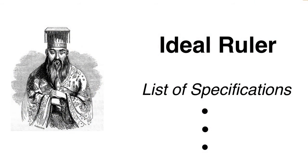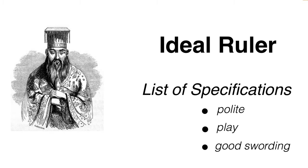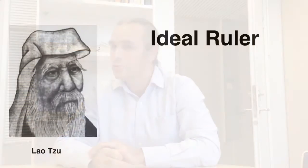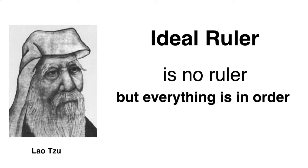There were several schools of philosophy. One of the most famous was the school of Confucius, who was a kind of government-paid person. He developed a list: the ideal ruler had to be polite, had to play the flute, be good at swordsmanship, and so on — a kind of technical specification of the system called 'ideal ruler.' His opponent, a free thinker named Lao Tzu, believed to be the founder of Zen Buddhism, said that the ideal ruler is no ruler, but everyone is happy and everything is in order. That concept was really amazing.